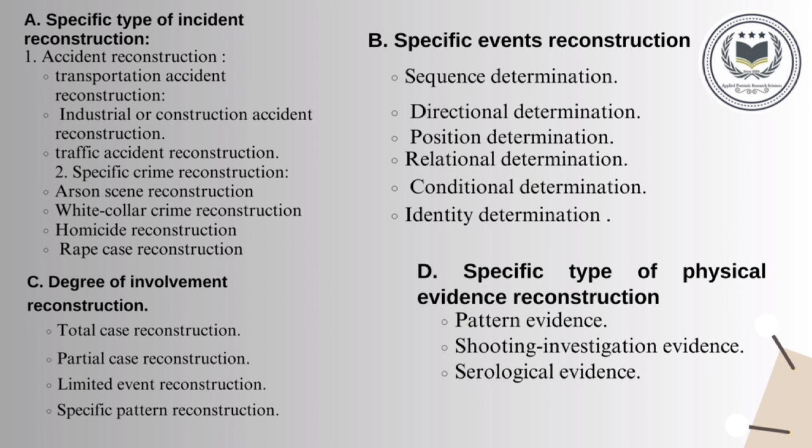The second classification is specific events reconstruction, which includes sequence determination, directional determination, position determination, relation determination, conditional determination, and identity determination. Here we perform reconstruction of events before, during, and after the crime scene and relate them. The third classification is degree of involvement reconstruction, which includes total case reconstruction, partial case reconstruction, limited event reconstruction, and specific pattern reconstruction — depending on how much of the case is reconstructed.